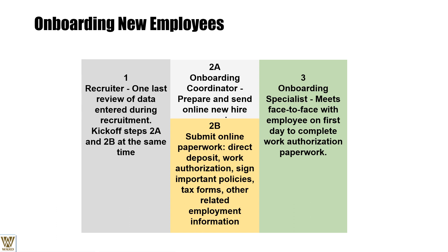Onboarding of new employees includes one last review of recruitment before they start work. Steps 2A and 2B involve preparing the online new hire — the onboarding coordinator does 2A, while 2B involves submitting online paperwork: direct deposit, work authorization, important policies, tax forms, and account details. Finally, the onboarding specialist meets face-to-face with the employee on day one to complete work authorization.